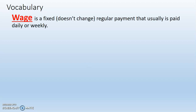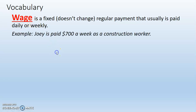Wage is a fixed, doesn't change, regular payment that's usually paid daily or weekly. Daily means once a day, weekly means once a week. An example would be: Joey's paid $700 a week as a construction worker.